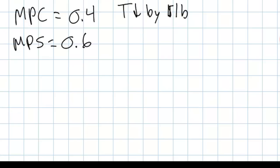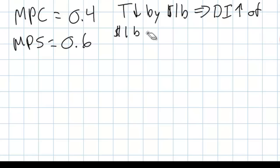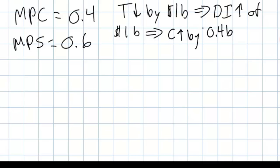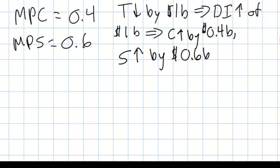A tax cut, unlike an increase in government spending, does not provide direct stimulus to aggregate demand. Rather it counts on households to increase consumption based on their marginal propensity to consume. A tax cut leads to an increase in disposable income of one billion dollars. However, not all of this will be used to consume since households tend to save 60 percent of every additional dollar of disposable income. Based on the MPC of 0.4, consumption will increase by only 0.4 billion dollars while savings increases by 0.6 billion dollars.